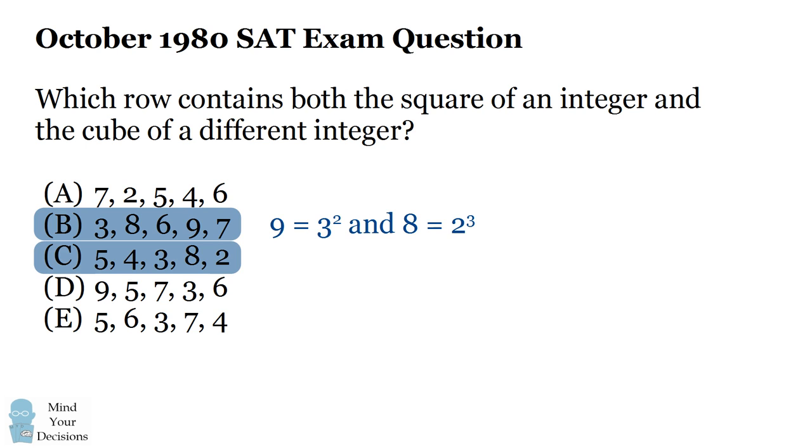Answer choice C was supposed to be a distraction. While it does contain the number four, which is the square of the number two, and the number eight, which is the cube of the number two, the problem with this answer choice is that the square and the cube are of the same integer two. So this was supposed to be a distraction, and about one-quarter of the students put this to be the correct answer.